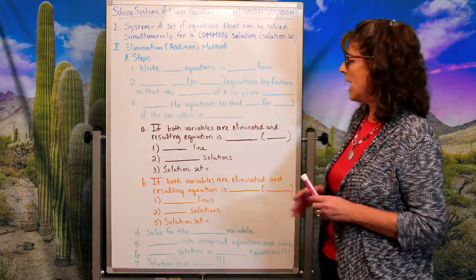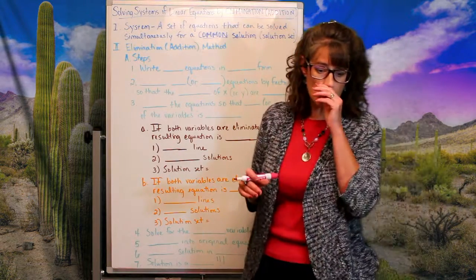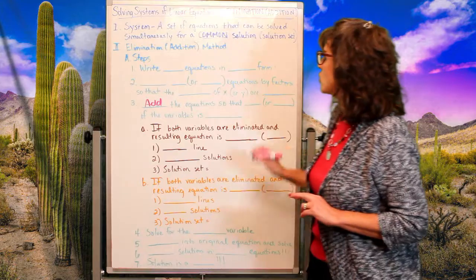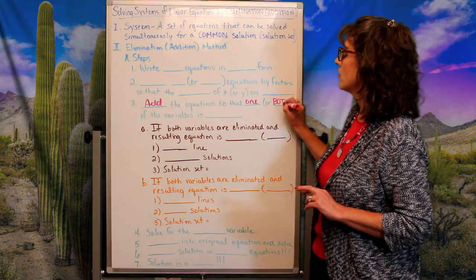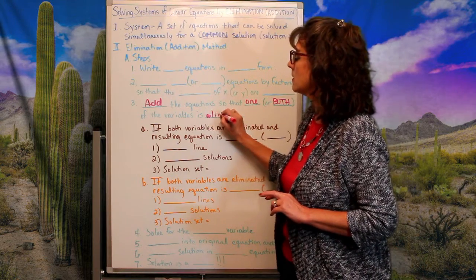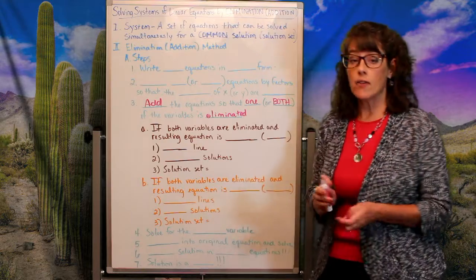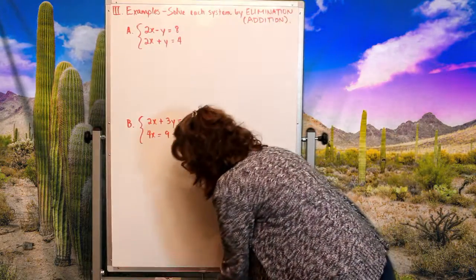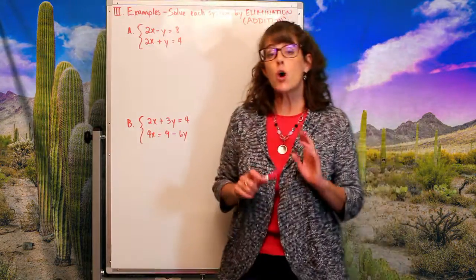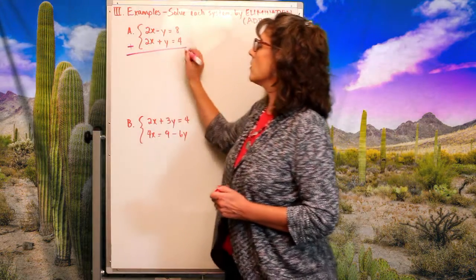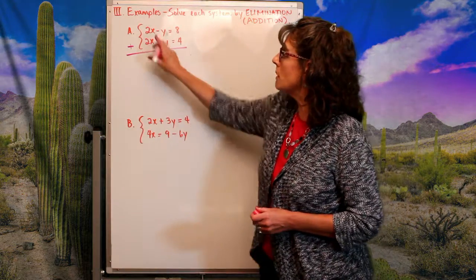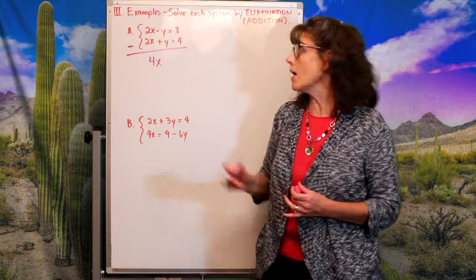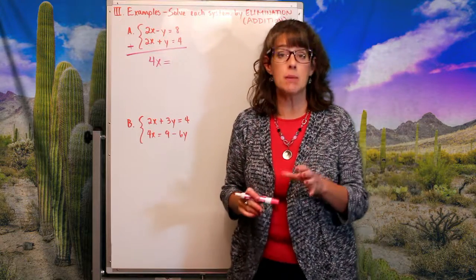Let's get into these steps. My goal is to add the two equations so that one — or potentially both — of the variables is eliminated. Looking at the first example: when I add the two equations, 2x plus 2x gives me 4x, but notice that negative y plus y cancels out — the y has been eliminated.